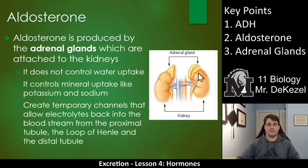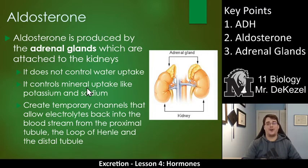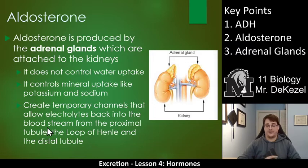Aldosterone is our other hormone and it is produced in the adrenal glands located on top of the kidneys. It does not control water uptake — what it really does is control mineral uptake. It's all about sodium, potassium, and the small ions that filter back and forth. What it does is allow temporary channels to be made that allow these electrolytes — sodium, potassium, and others — to flow back into the bloodstream, so we are losing less of them. So ADH controls your water balance, and aldosterone is the hormone that controls your electrolyte balance — all the different things that flow back and forth that aren't water, from your loop of Henle into your bloodstream.